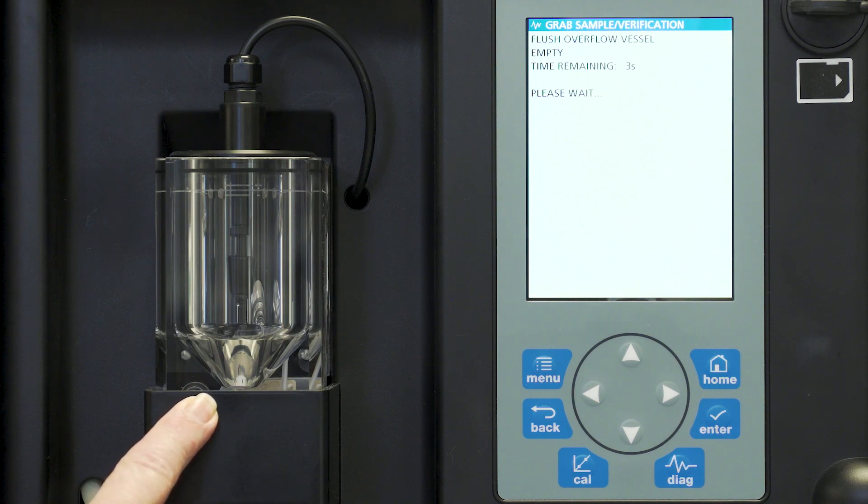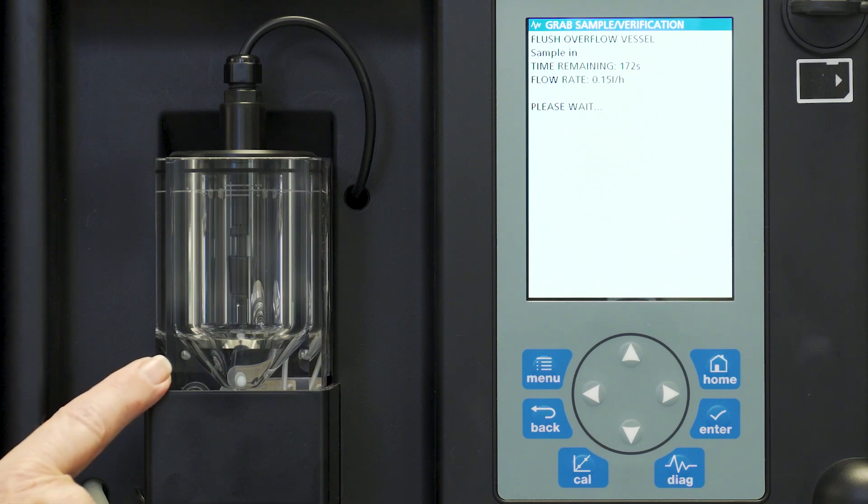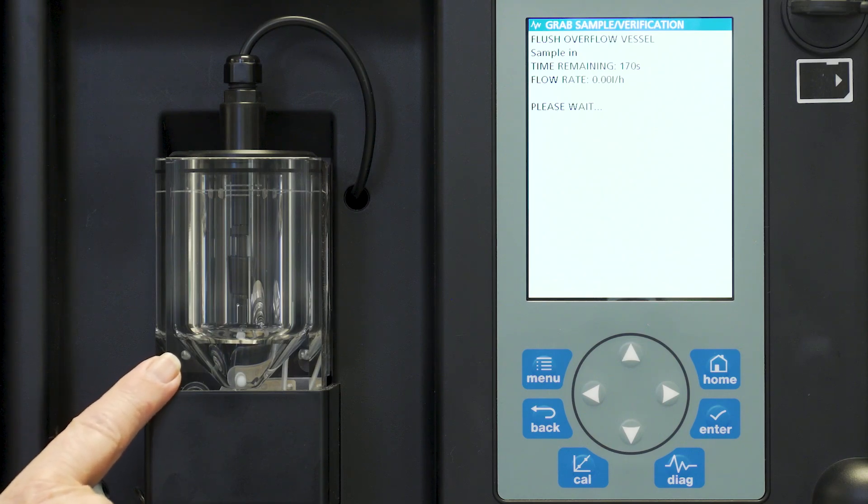You will hear the pump go and it will return on and refill this flow chamber with water again. So now we're in the flush overflow vessel, sample in. It's now starting to refill this overflow chamber with your water sample for a final flush.